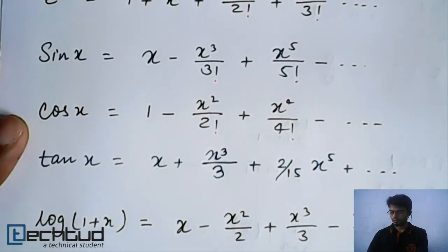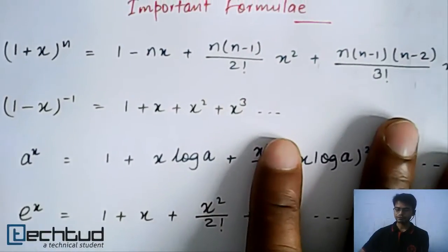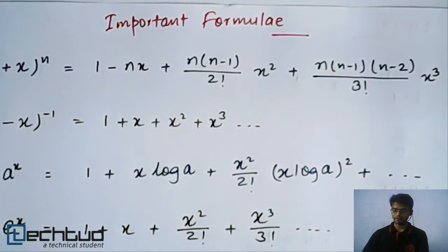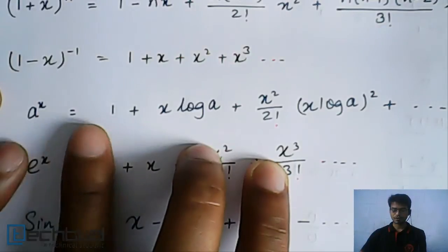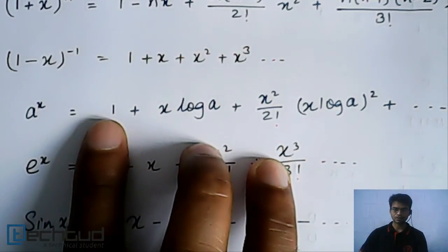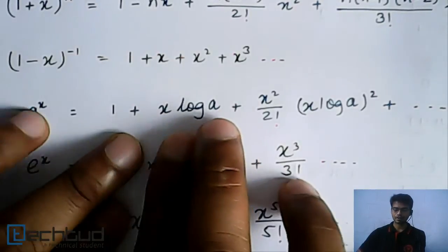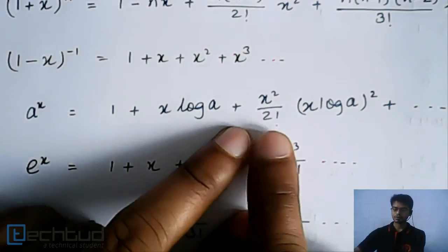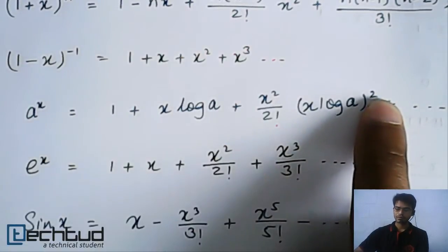This is basically the expansion of various terms, like (1+x)^n which is (1-nx). You have to remember the sequence — don't just mug up, remember the pattern. For example, take the formula a^x. If you see this, there is a sequence: the first term is 1, then x·log(a). That's enough to remember. In the next term the power increases: x² over 2 factorial, and so on.